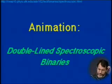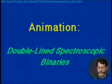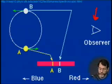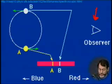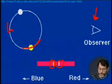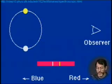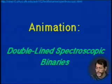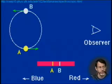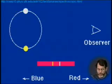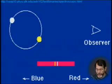This is a spectroscopic binary animation. If the observer is here, watching two stars A and B orbit each other, you can see the spectral lines move with respect to each other. The Doppler shift will cause the star moving toward you to have its spectral line move to the blue end, and the star moving away from you to have its spectral line move to the red end. You can watch as the stars go round relative to the observer and see how their spectral lines move.